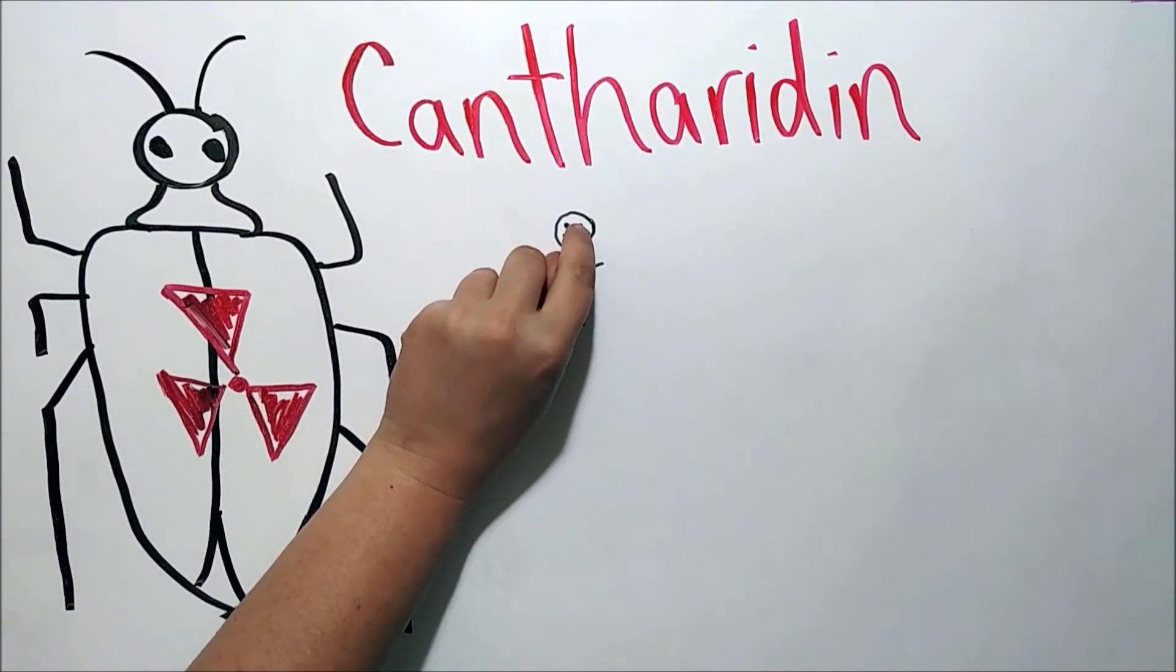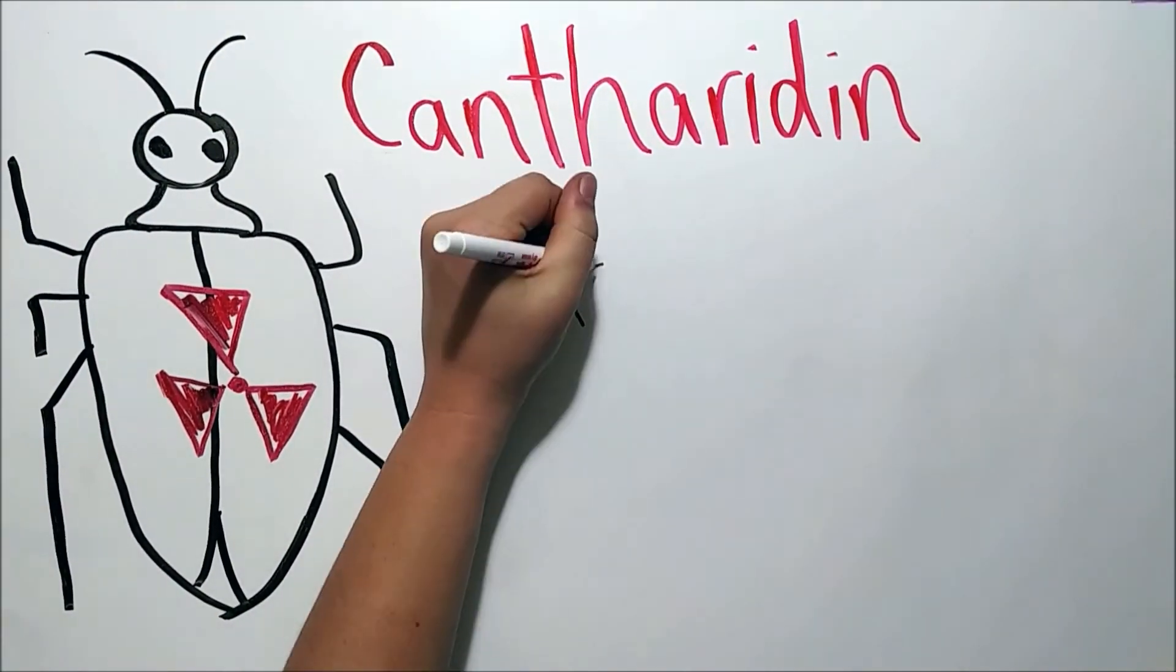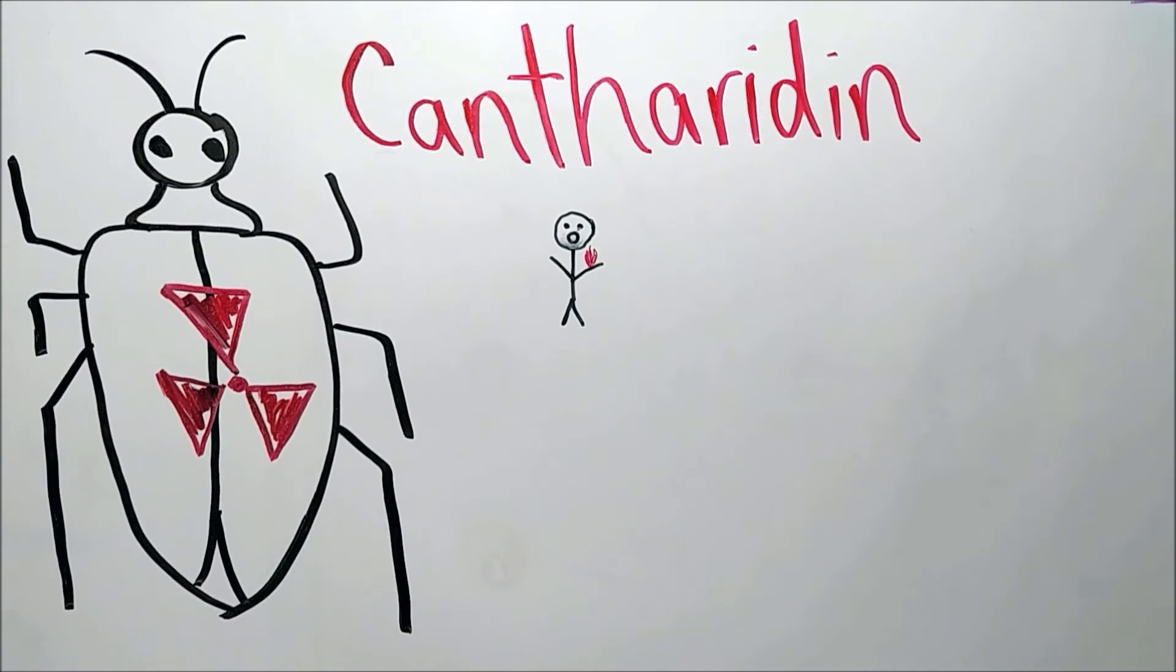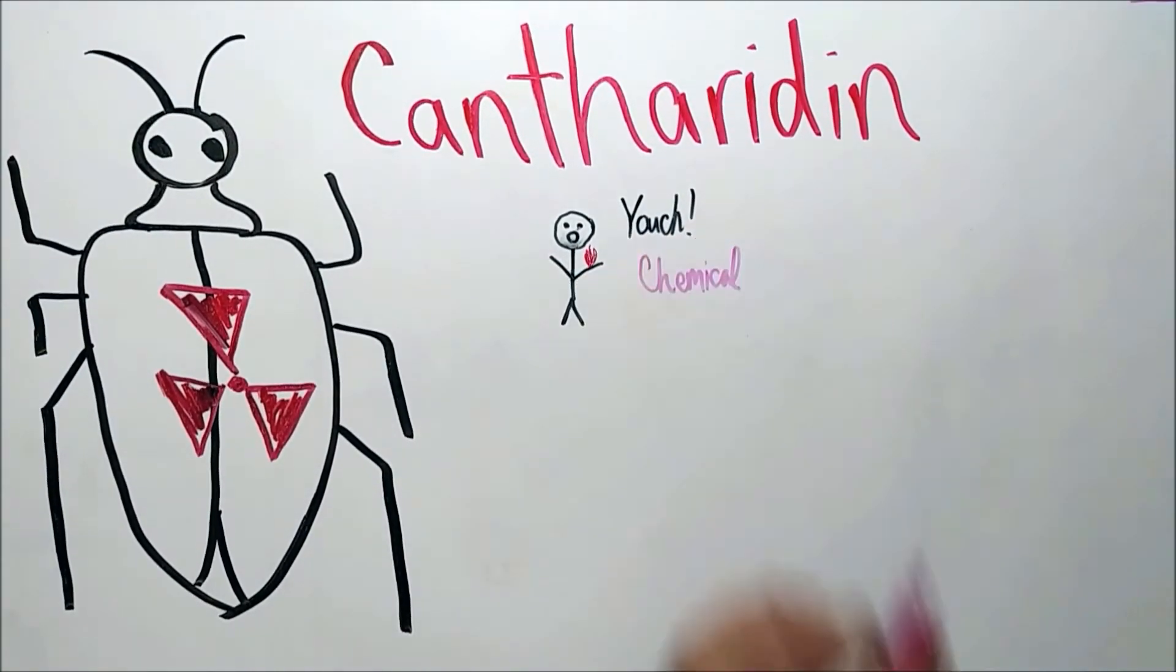Cantharidin can also burn and blister skin if it comes in contact with it. That is where they get the name blister beetles. That's a warning to insect collectors out there. Know your bugs or you could get an unwelcome surprise.